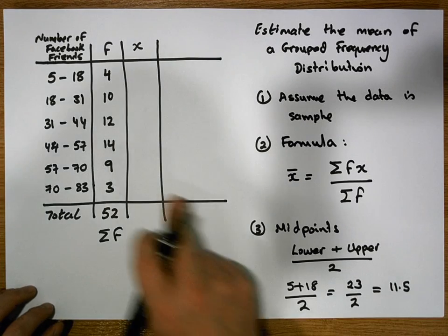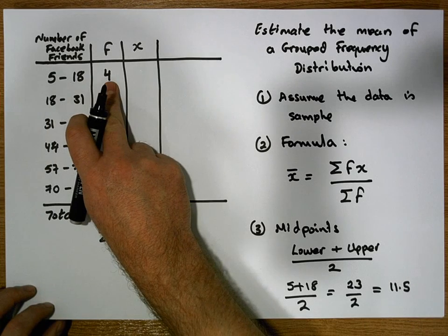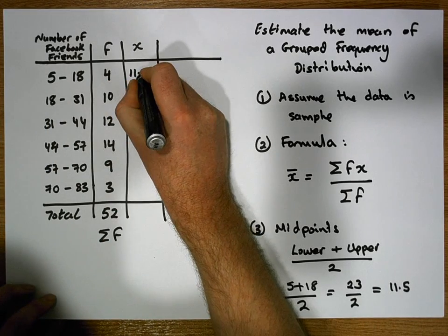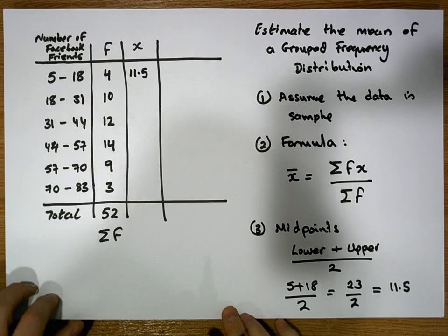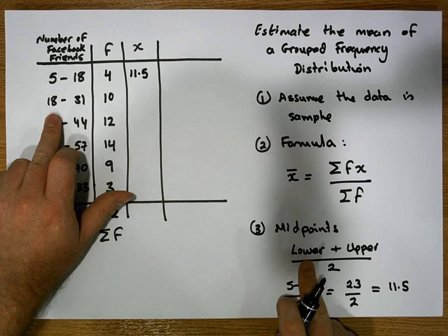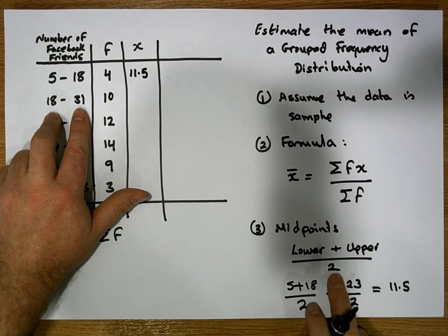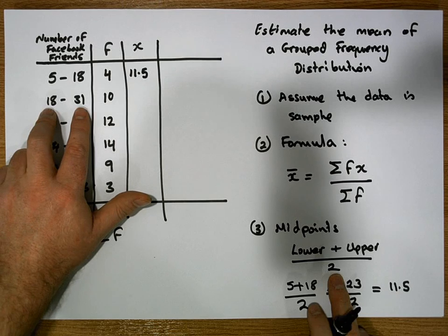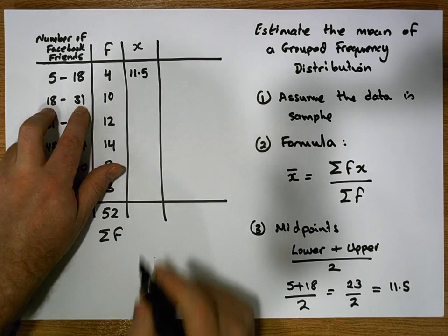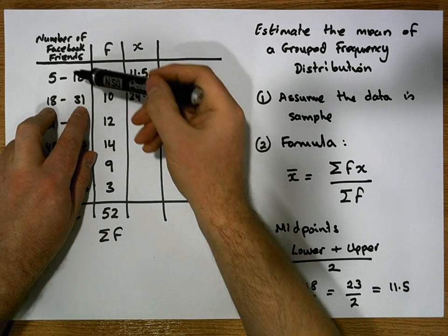We're going to assume that 11.5 represents an observation in this particular interval, and we're going to assume these four observations were 11.5. Then for the next x value in the next interval, it's the lower bound plus the upper bound divided by 2. So it's 18 + 31 = 49, and 49 ÷ 2 = 24.5.